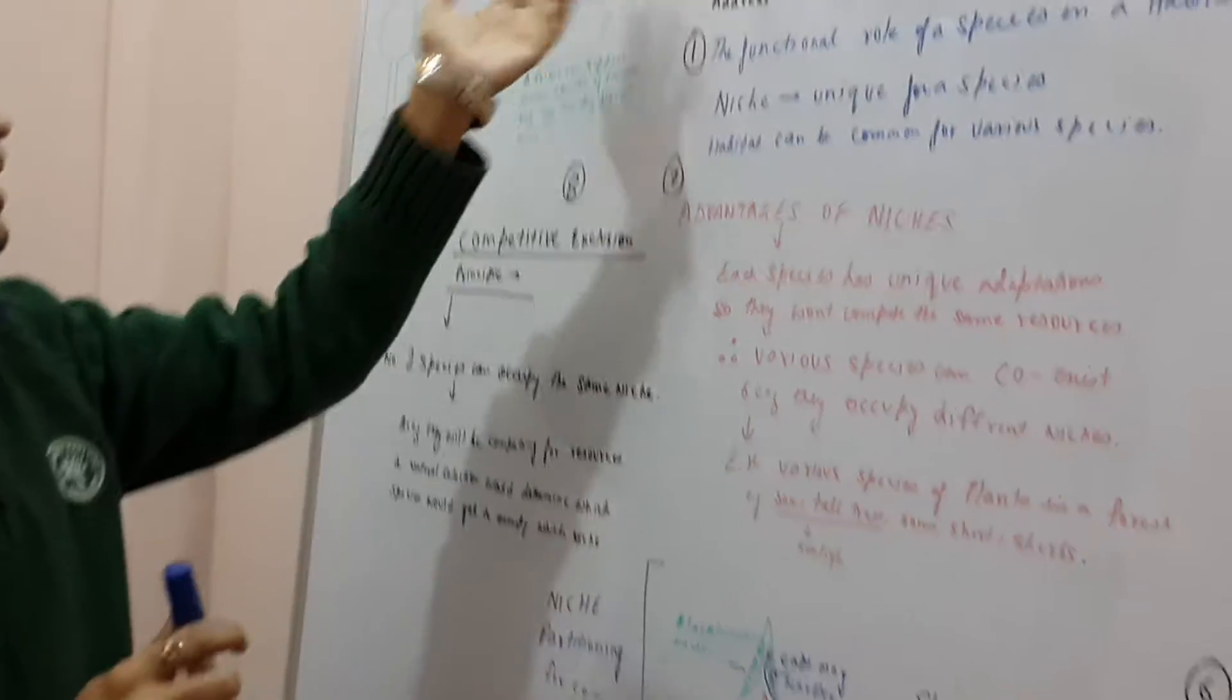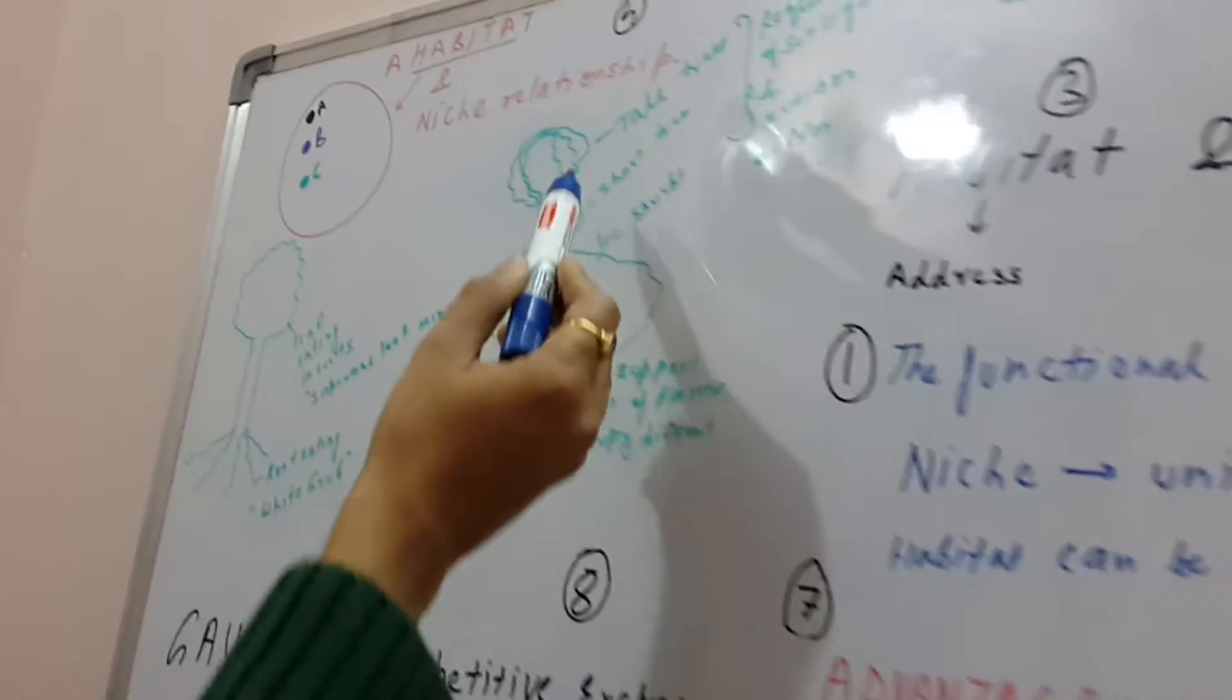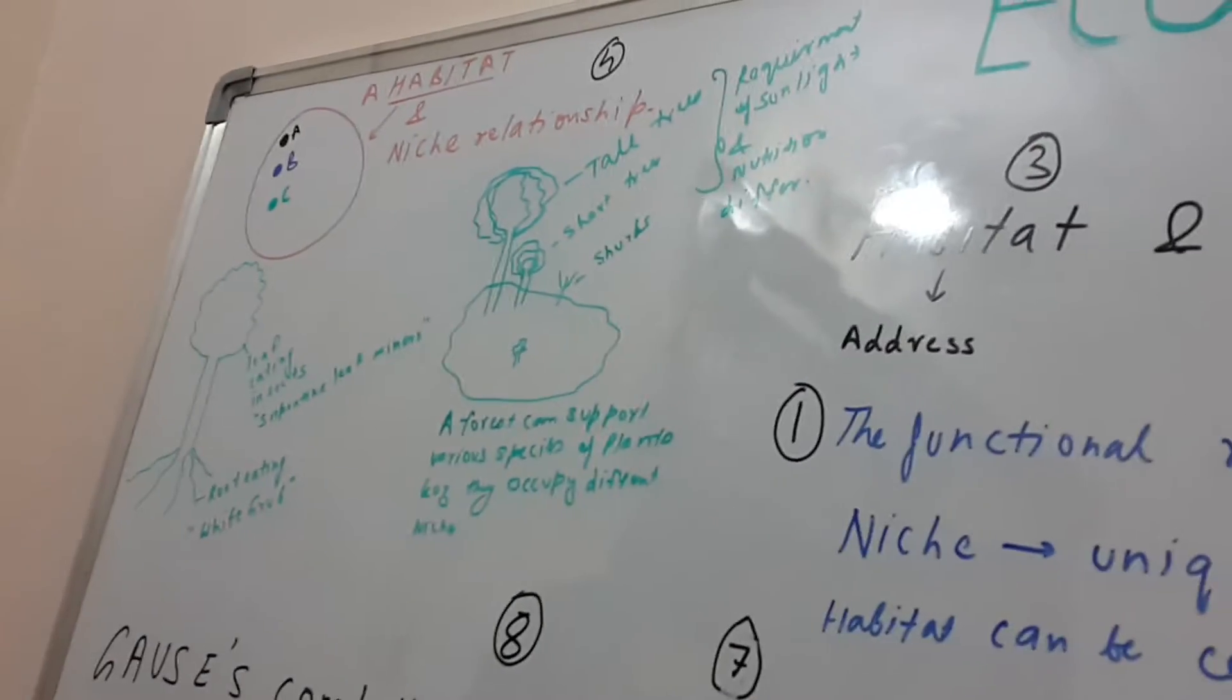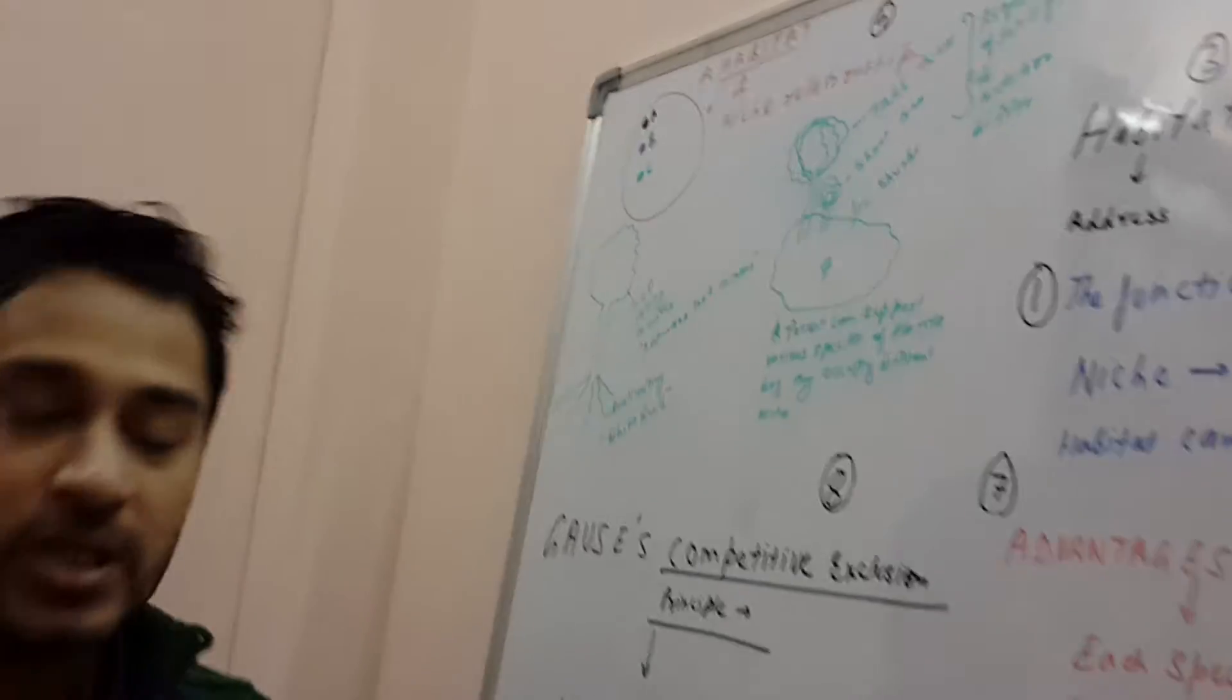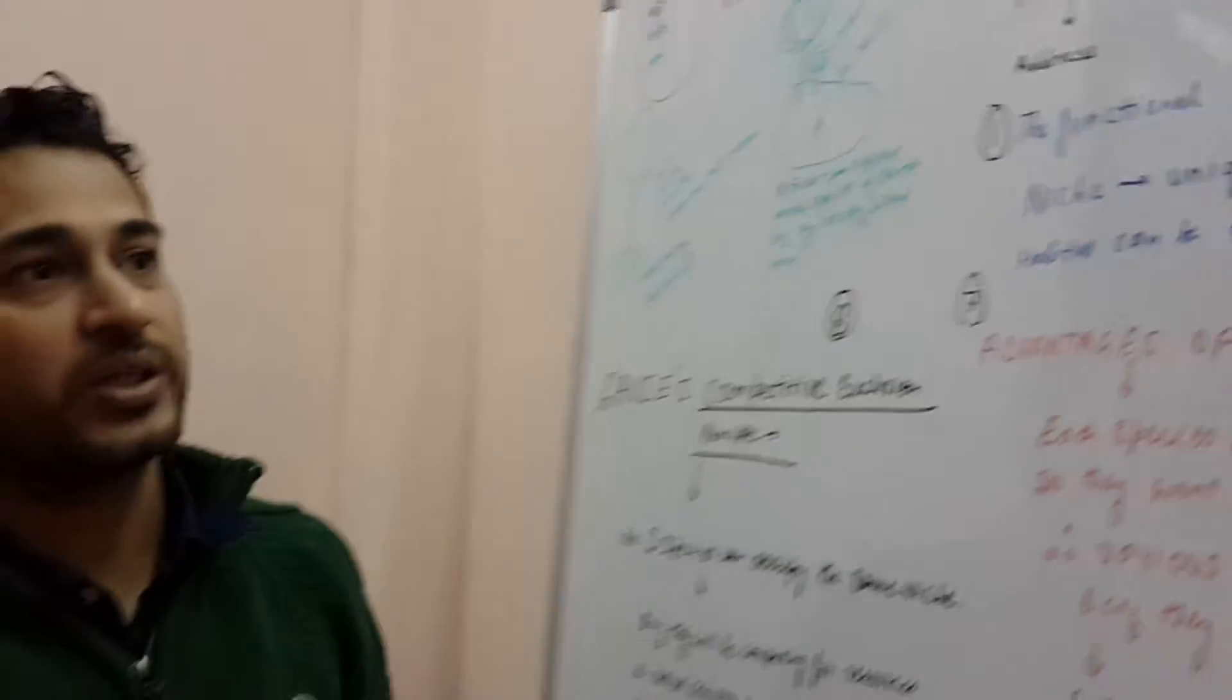You know, like if we talk about a forest. In a forest there are tall trees, short trees, shrubs. They have all different requirements of sunlight and nutrition, so they can easily coexist together.